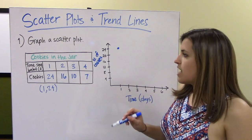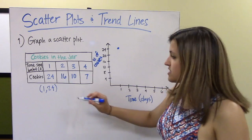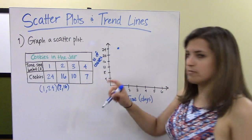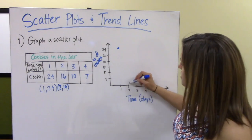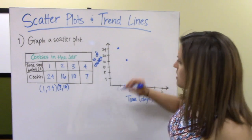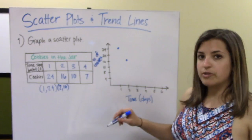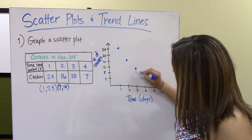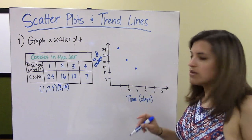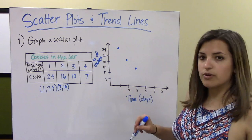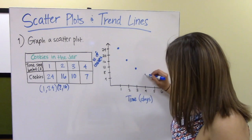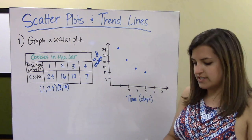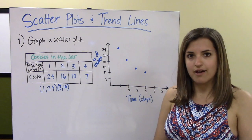After two days there are 16 cookies, so that's the point (2, 16). Then (3, 10) — that's halfway between 8 and 12 on the y-axis. And after 4 days there are 7 cookies left, so that's just below 8 up here. There we have our scatter plot.